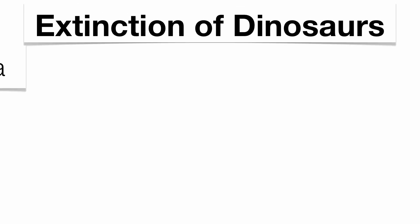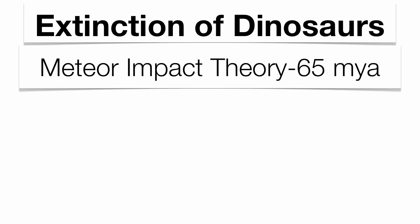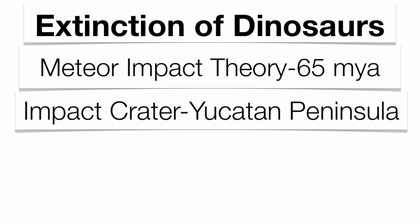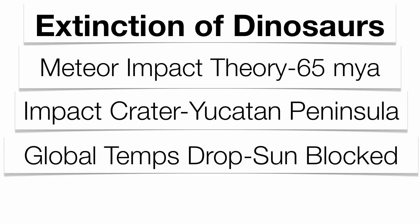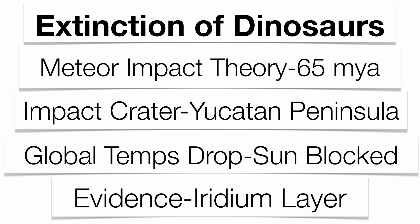The extinction of the dinosaurs is probably the most widely studied extinction event. We believe that about 65 million years ago, an asteroid or meteor hit the Yucatan Peninsula. Because of the severity of the impact, so much dust was put into the atmosphere that the sun was blocked, dropping global temperatures. The evidence of this impact is a very important element called iridium, only found in space objects. A very thin layer of iridium literally covers the entire planet and dates back to about 65 million years ago.